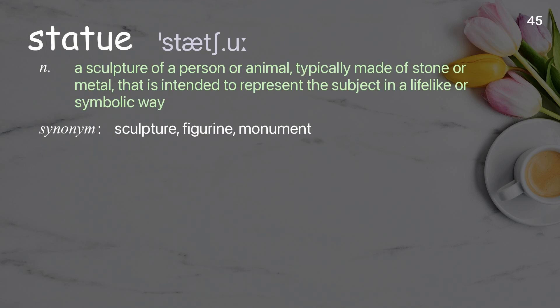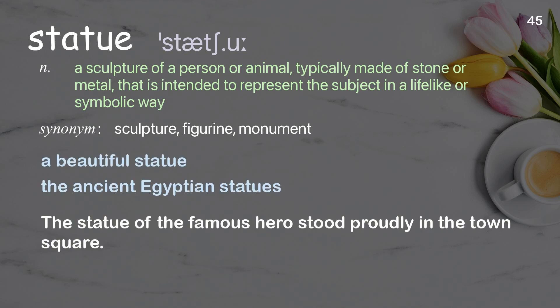Statue: A sculpture of a person or animal, typically made of stone or metal, intended to represent the subject in a lifelike or symbolic way. Examples: A beautiful statue. The ancient Egyptian statues. The statue of the famous hero stood proudly in the town square.